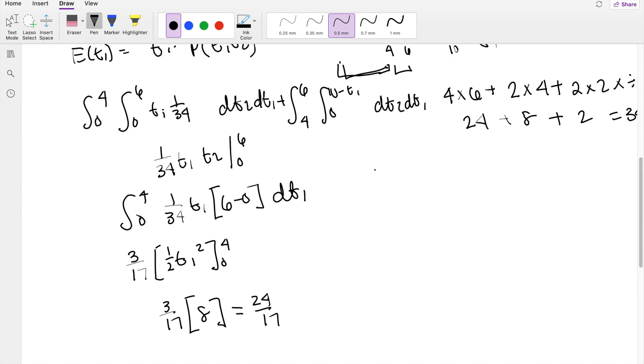Likewise, on this side, when I take the integral, you're going to still get 1 over 34, t1, t2. But then the range here is going to be going from 0 to 10 minus t1 for t2. So plugging that in, you get 1 over 34, t1, 10 minus t1 minus 0. So then you're left with 1 over 34, 10 t1 minus 1 over 34, t1 squared.